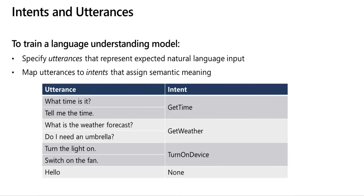After identifying the intents your model must support, it's important to capture various different examples of utterances for each intent. Collect utterances that you think users will enter, including utterances that mean the same thing but are constructed in different ways. Keep these guidelines in mind: capture multiple different examples or alternative ways of saying the same thing; vary the length of utterances from short to medium to long; vary the location of the noun or subject — place it at the beginning, end, or somewhere in between; and use both correct and incorrect grammar to offer good training data examples.